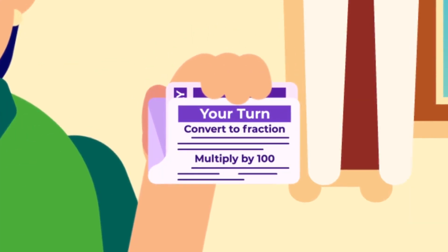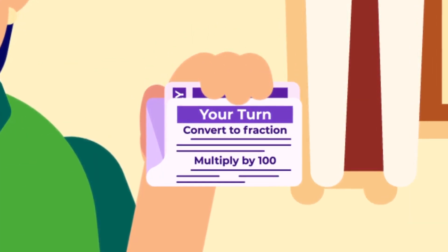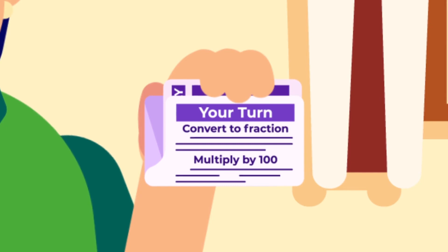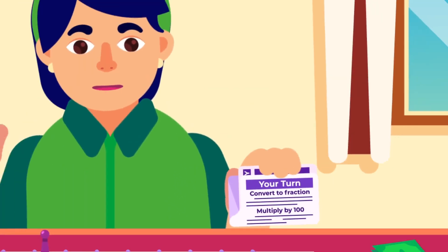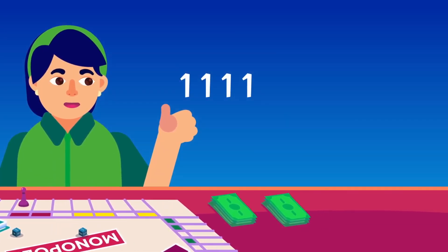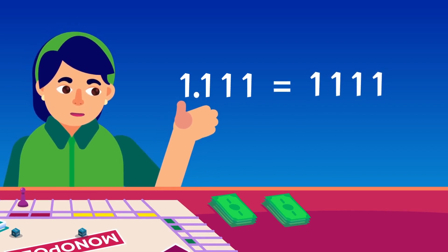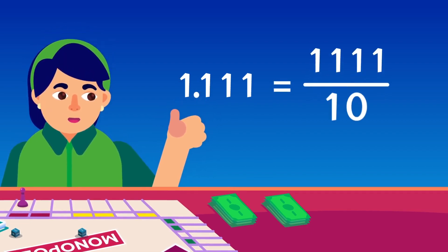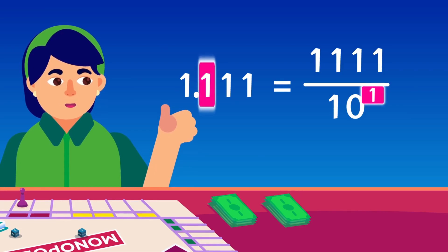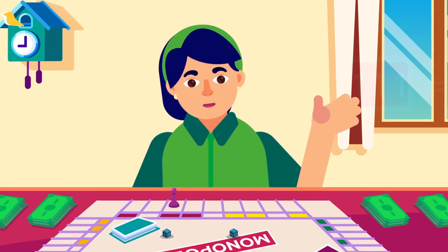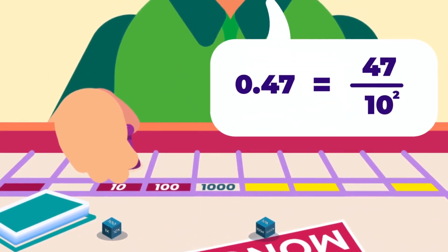Number 1: convert to a fraction by using the thumb rule. Number 2: multiply by 100 and write it as a percentage. We will use the thumb rule of decimal numbers here. The decimal point is placed at a specific position exactly to the right of the unit position of the whole number. Once you remove the decimal, the number will be divided by powers of 10 equal to the number of spaces after the decimal point, counting from the left. Since we need to change this decimal into a fraction, we will remove the decimal point and divide it by powers of 10 equal to the number of spaces after the decimal point.